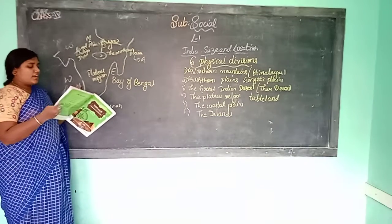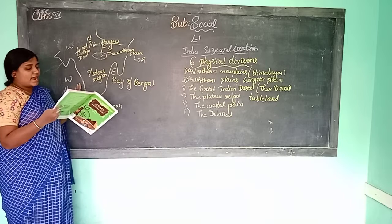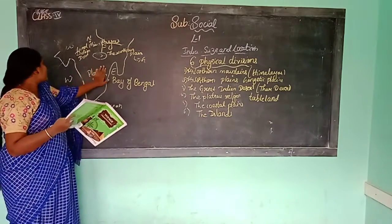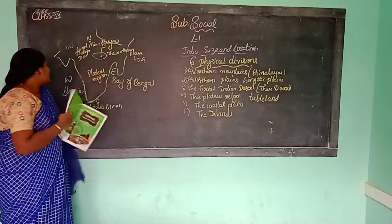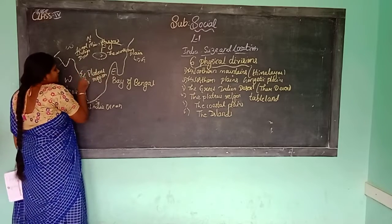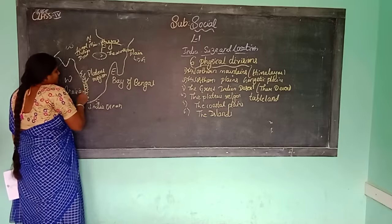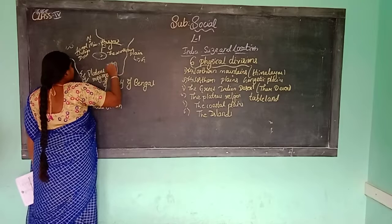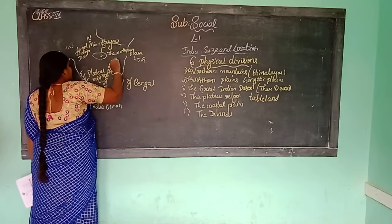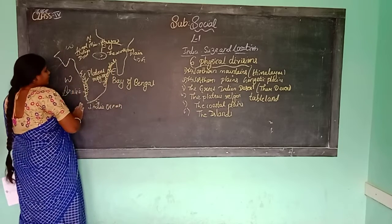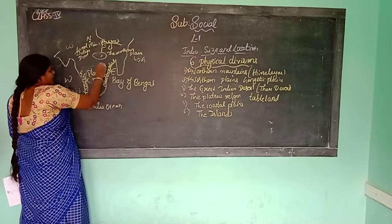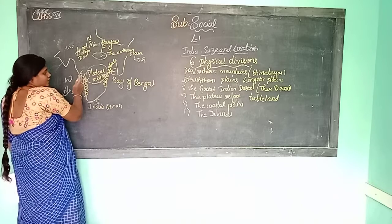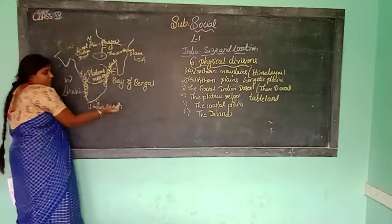Another name for the Plateau Region is Table Land. It is surrounded by the Eastern Ghats in the east and the Western Ghats in the west. So this Plateau Region is surrounded by Ghats on both sides.